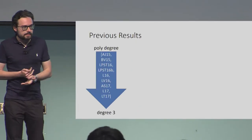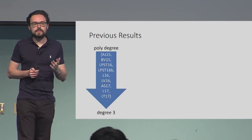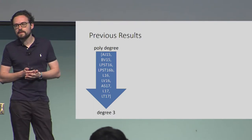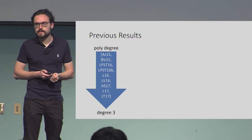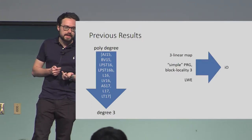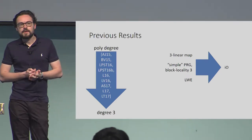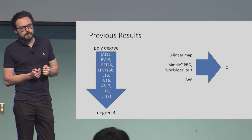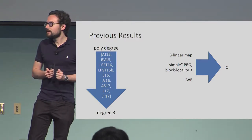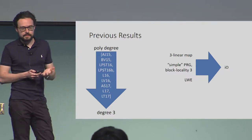There has been an impressive line of previous research that has managed to bring down the degree needed for the multilinear maps from polynomial degree down to constant and ultimately degree just three. What is known so far is that we can get IO from trilinear maps, a simple type of PRG, and LWE. Our goal was to go just one step further and reduce the degree to two, because for bilinear maps we have good candidates and these are well understood.